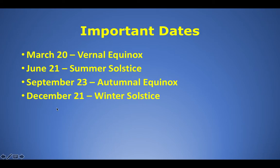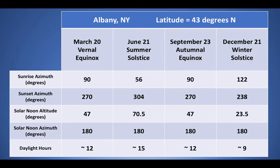We're going to look at these four dates for each location to determine sun's paths. Using the sun's path calculator for Albany, New York, which has a latitude of 43 degrees north, I've put together a data table with the equinoxes — March 20th and September 23rd — and the two solstices. Looking at these numbers, it might appear to be just a random assortment, but there are actually some very nice patterns. Once you know the patterns, you can use them to figure out sun's paths for different areas.